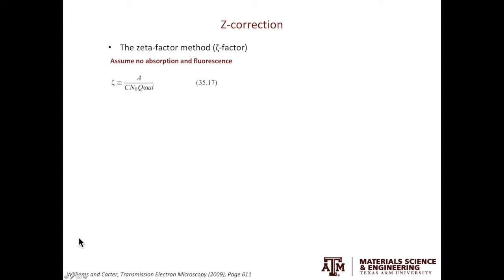The second approach to correct Z is the zeta factor method. This is the equation to calculate zeta. And the only new parameter is I, the current, which you can measure using a Faraday cup. N0 is the Avogadro's number.